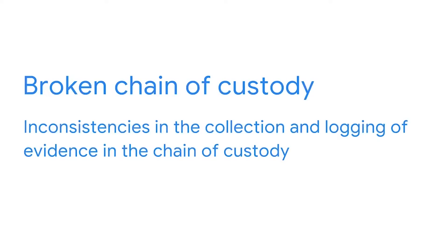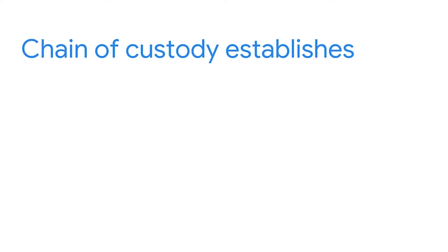You may be wondering what happens if evidence gets logged incorrectly or if there's a missing entry. This is known as a broken chain of custody, which occurs when there are inconsistencies in the collection and logging of evidence. In the court of law, chain of custody documents help establish proof of the integrity, reliability, and accuracy of the evidence. For evidence related to security incidents, chain of custody forms are used to help meet legal standards so that this evidence can be used in legal proceedings. If a malicious actor compromised a system, evidence must be available to determine their actions so that appropriate legal action can be taken.